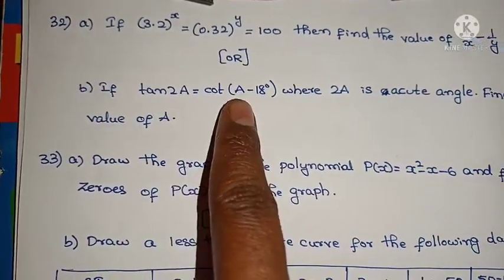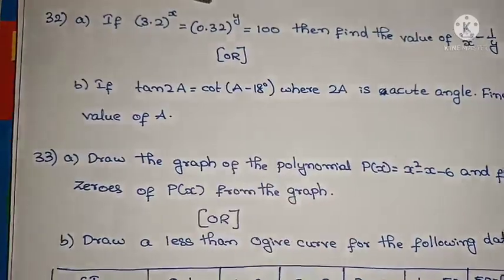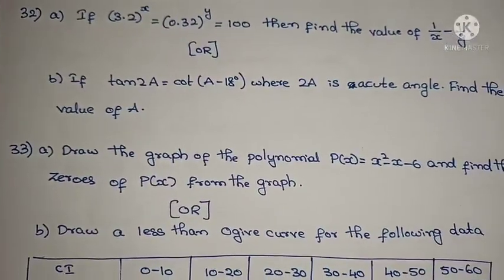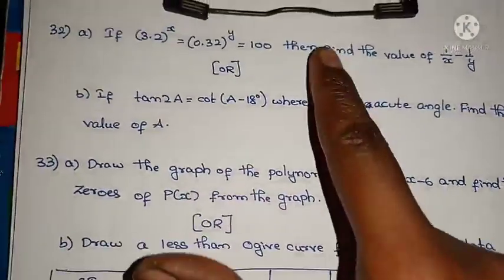The internal choice: If tan(2A) equals cot(A - 18°), where 2A is an acute angle, find the value of A.